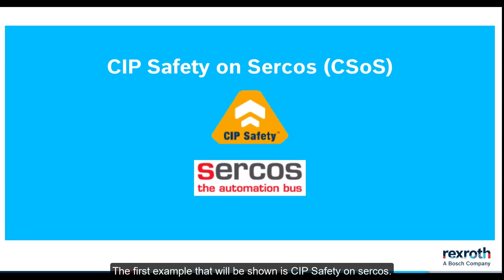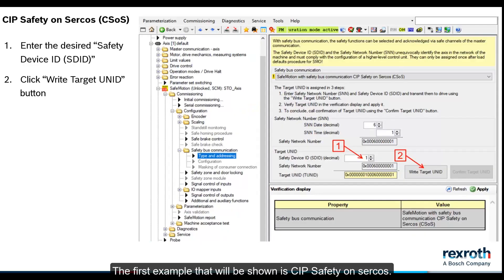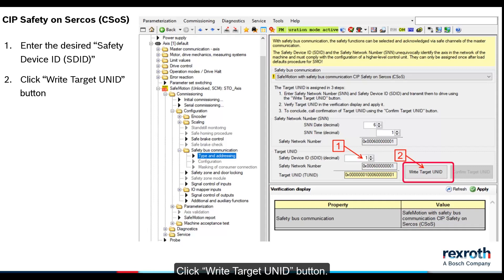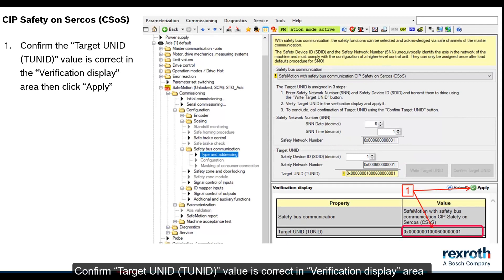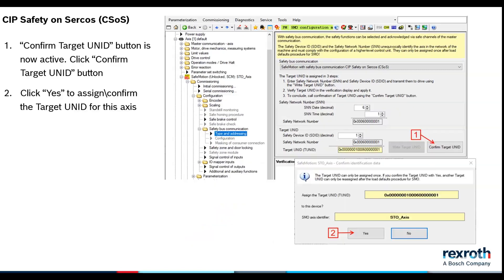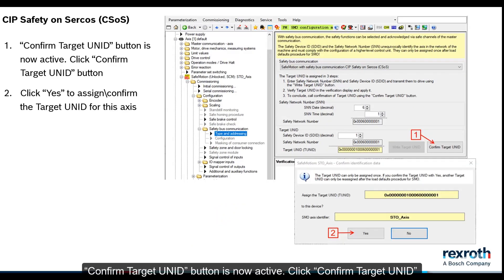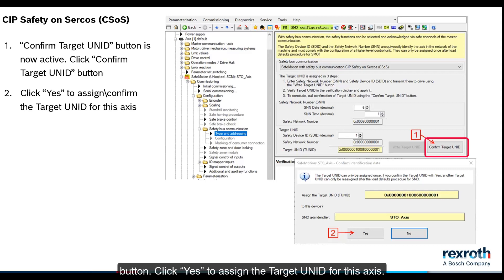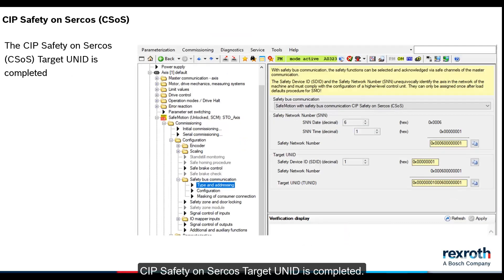The first example that will be shown is SIP safety on SIRCOs. Enter the desired safety device ID SDID. Click write target UNID button. Confirm target UNID value is correct in the verification display area, then click apply. Confirm target UNID button is now active. Click confirm target UNID button. Click yes to assign the target UNID for this access. SIP safety on SIRCOs target UNID is completed.